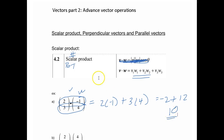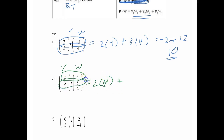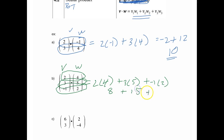And that's how easy it is to take the dot product of two things. Now this next example has three terms. Same process — multiply the corresponding parts: 2 times 4, plus 3 times 5, plus negative 1 times 2. So you get 8 plus 15 plus negative 2, which gives you 21.